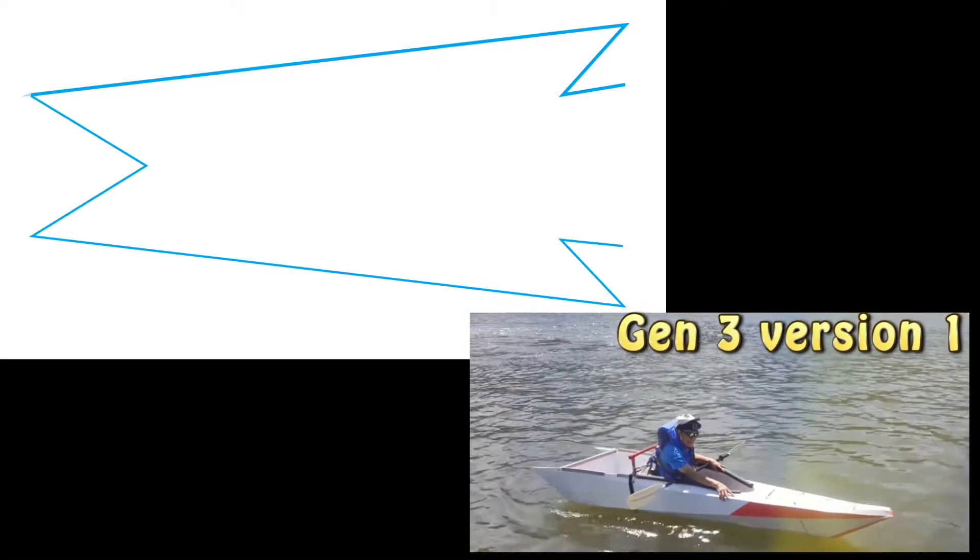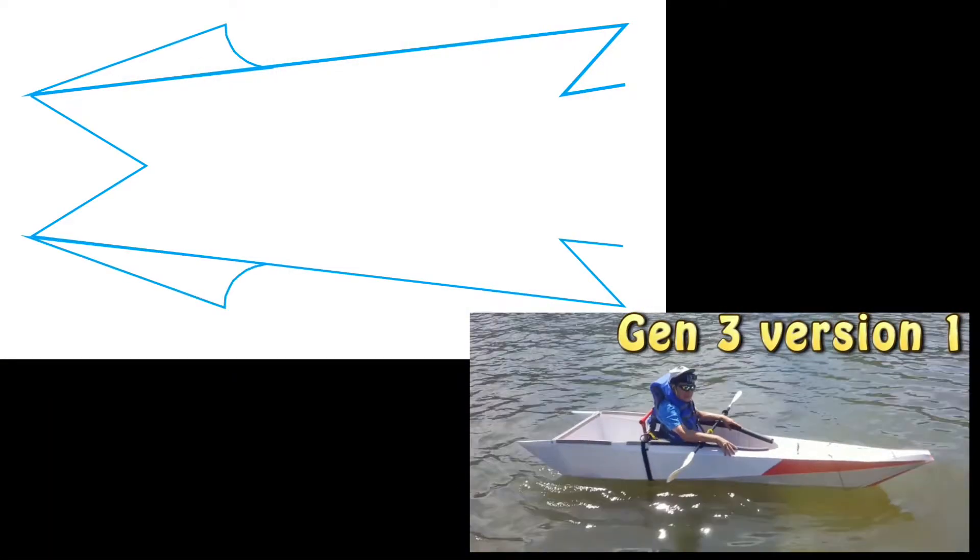One unique thing about using Coroplus to build boats is I can easily modify the characteristics of the boat by changing the fold lines. In 2018 I created my Gen 3, a very simple boat.